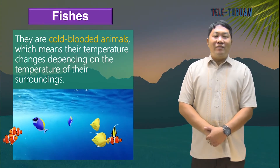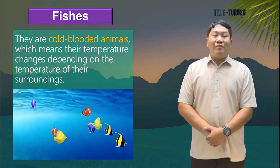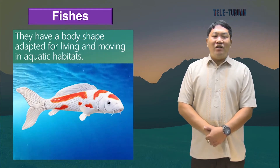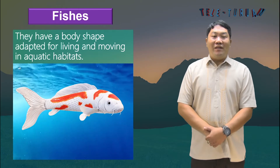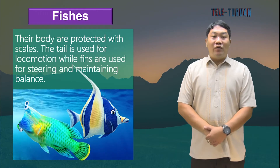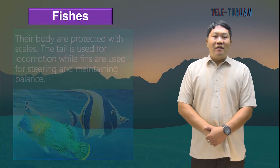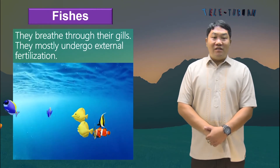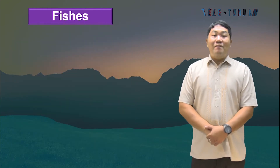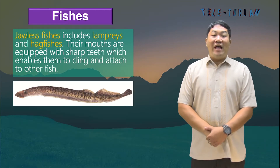Fishes are vertebrates that live in water. They are cold-blooded animals, which means their temperature changes depending on the temperature of their surroundings. They have a body shape adapted for living and moving in aquatic habitats. Their bodies are protected with scales. The tail is used for locomotion while fins are used for steering and maintaining balance. They breathe through gills and mostly undergo external fertilization. Fishes have many smaller groups. There are jawless fishes, which include lampreys and hagfishes.